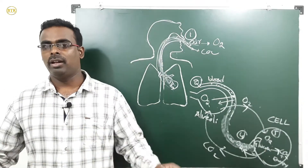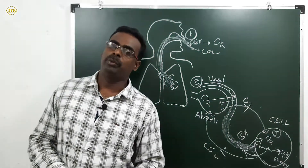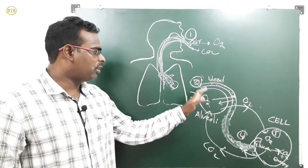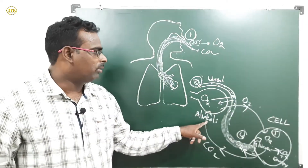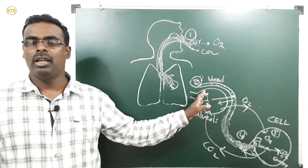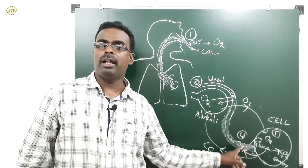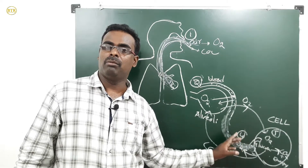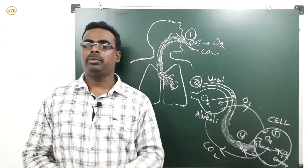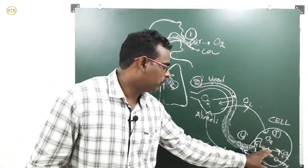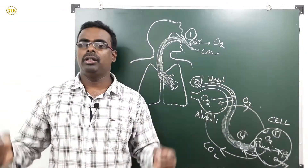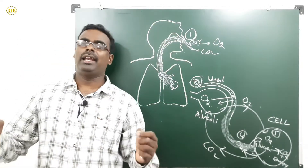So these are the five steps in respiration. Step one: breathing. Step two: exchange of gases between the alveoli and blood. Step three: transport of gases from alveolus to cell and cell to alveolus. Step four: exchange of gases between blood and cell — oxygen from blood into cell, carbon dioxide from cell into blood. Step five: cellular respiration — the cell breaks down glucose using oxygen to produce carbon dioxide and energy.